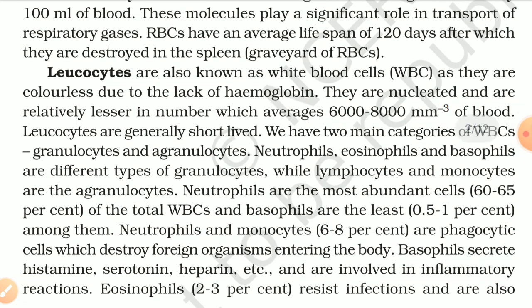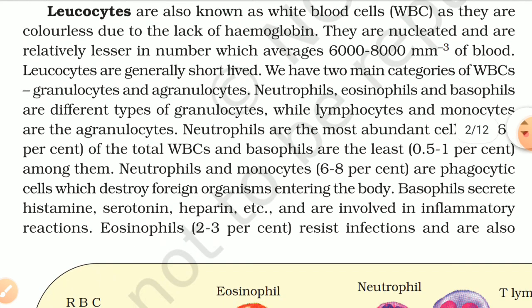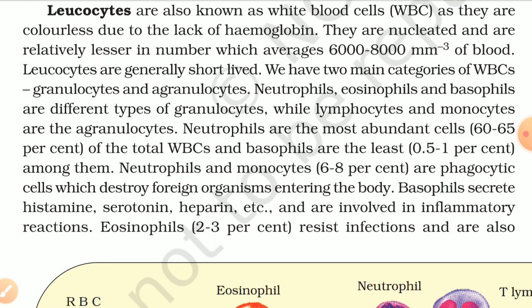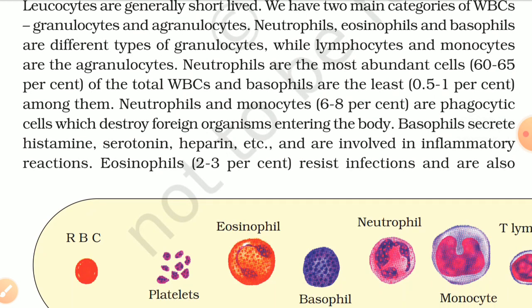Leucocytes are also known as white blood cells as they are colourless due to lack of haemoglobin. They are nucleated and are relatively fewer in number, averaging 6000 to 8000 per cubic millimetre of blood. Leucocytes are generally short-lived. We have two main categories of WBCs: granulocytes and agranulocytes. Neutrophils, eosinophils, and basophils are types of granulocytes, while lymphocytes and monocytes are agranulocytes. Neutrophils are the most abundant (60–65% of WBCs) and basophils the least (0.5–1%). Basophils secrete histamine, serotonin, heparin, etc. and are involved in inflammatory reactions.